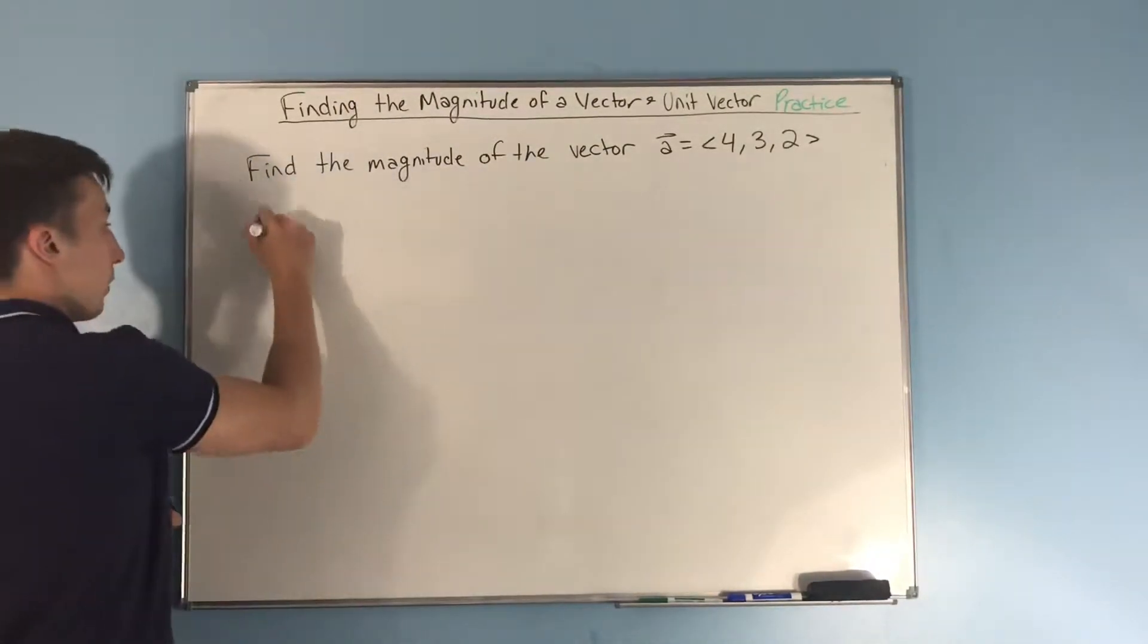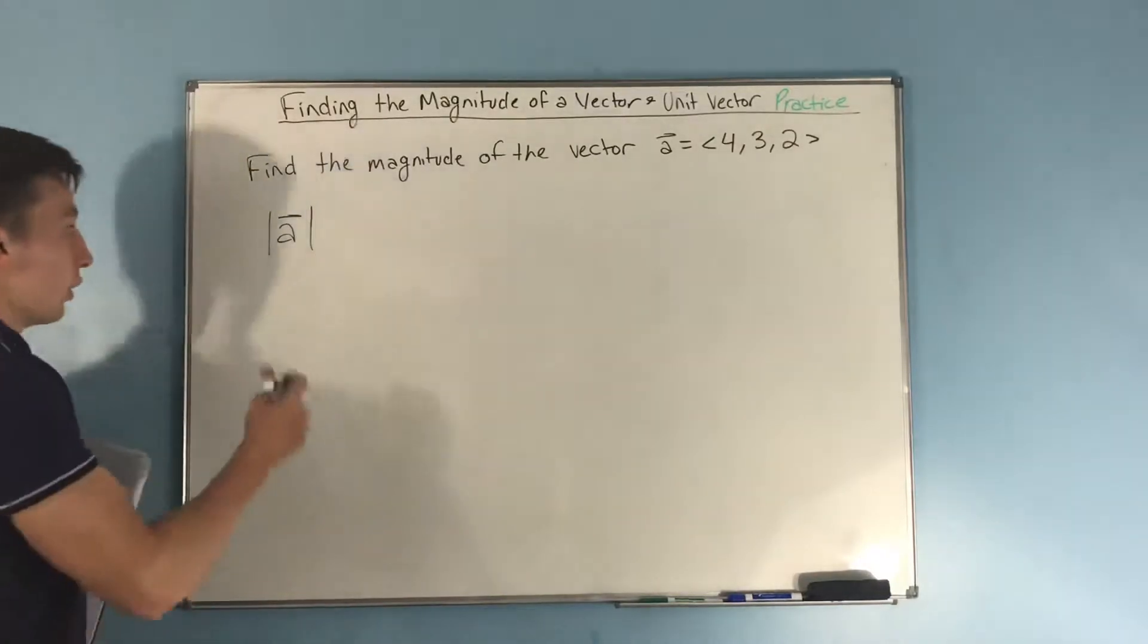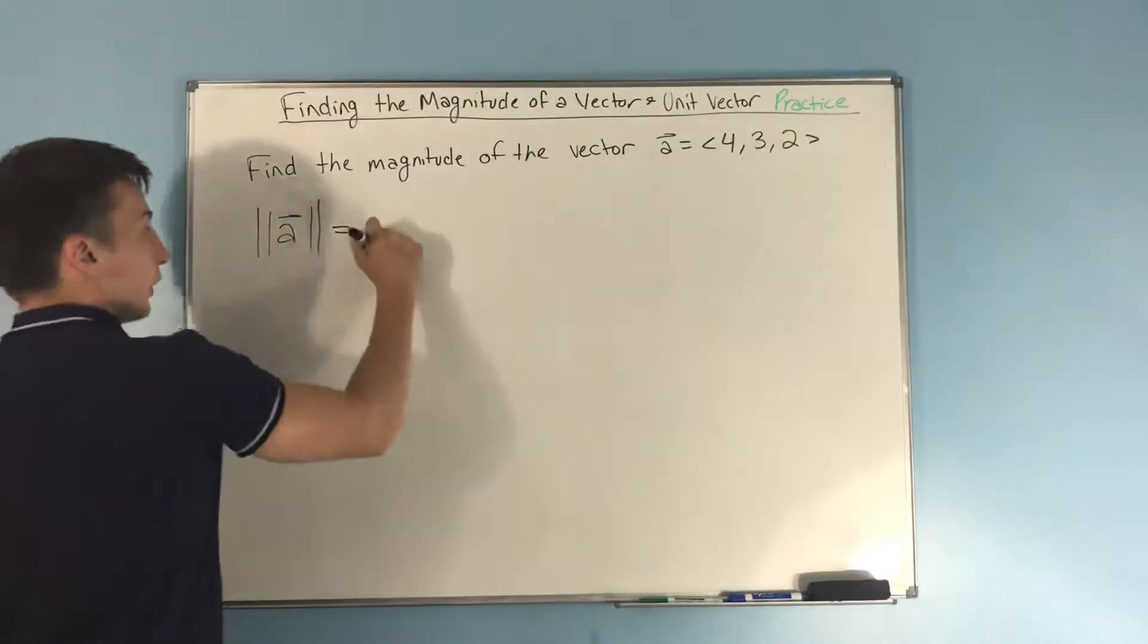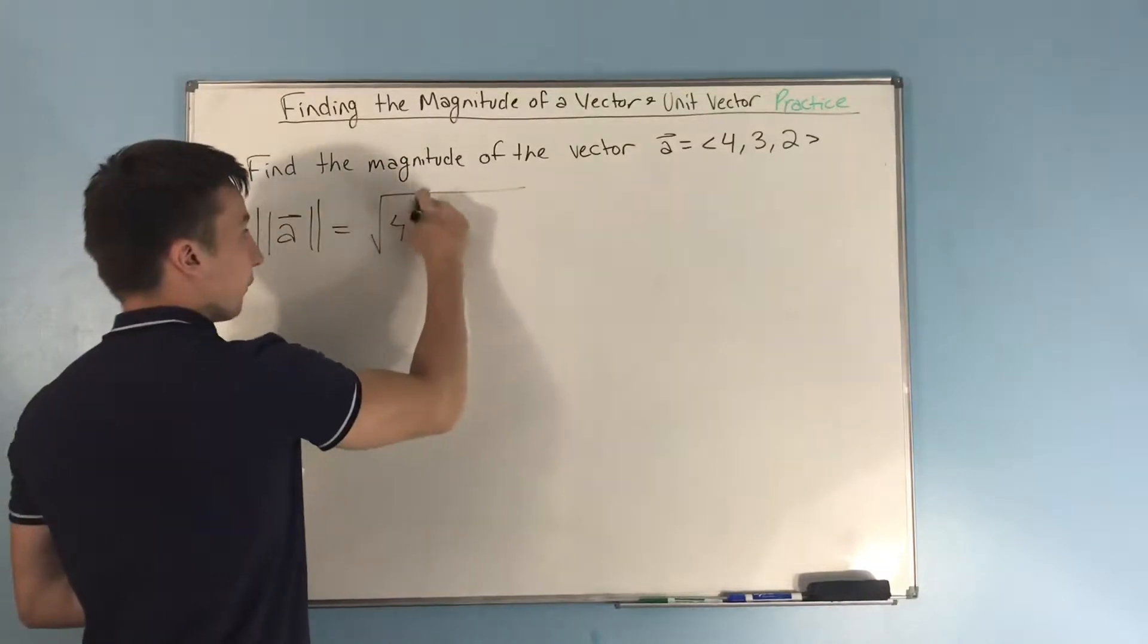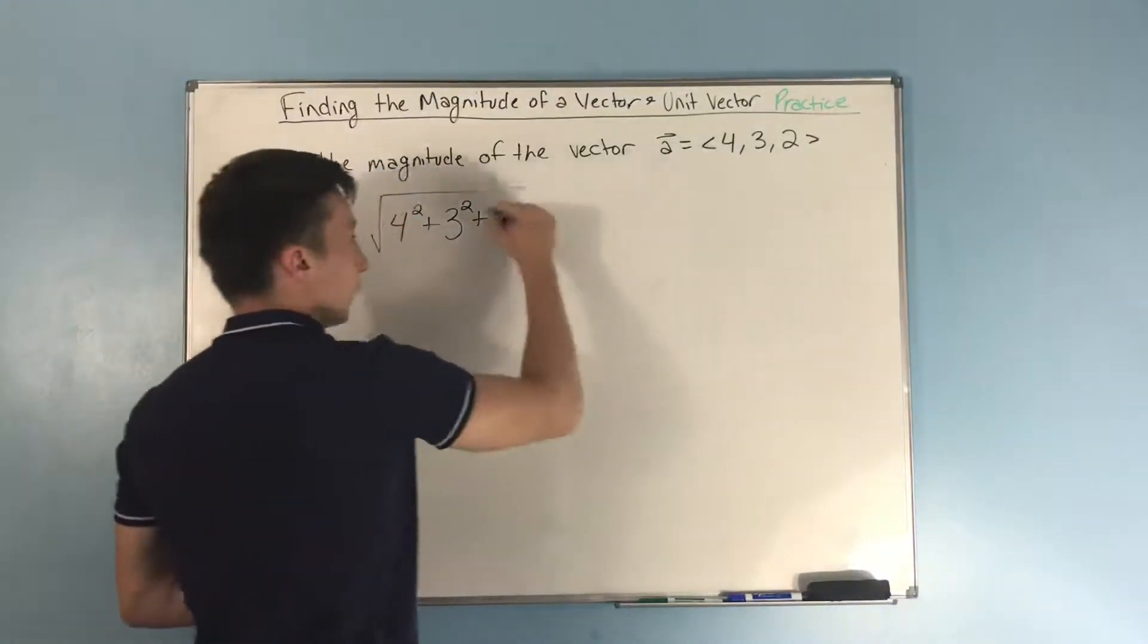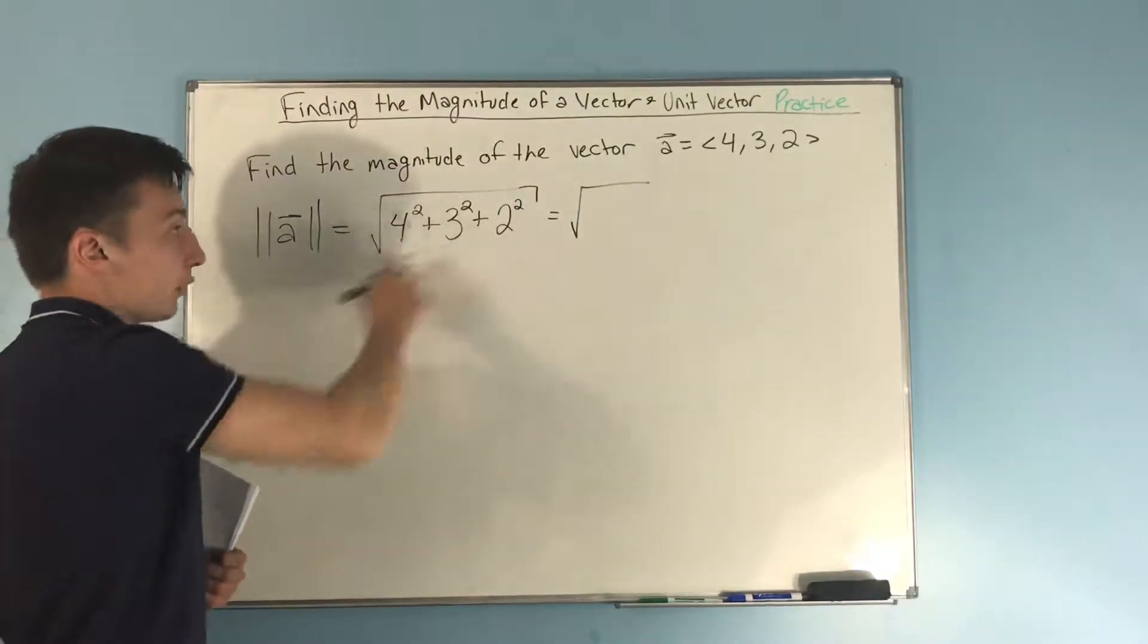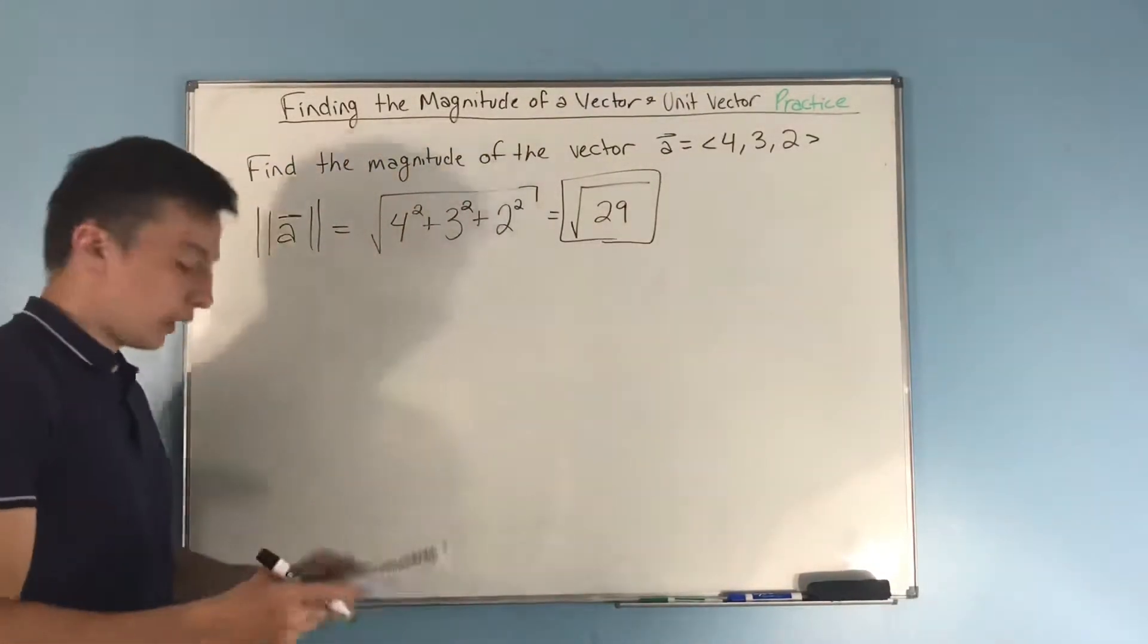So to find the magnitude of a, remember that can be represented either as a with just single bars around it, or you could have double bars. It may range differently from professor to professor or teacher to teacher. So you literally just use your distance formula here. You have your x component squared, so 4 squared, plus your y component, 3, that's going to be squared, plus your z component, 2, that's going to be squared. All right, well, if you square all that, we've got 16 plus 9, which is 25, plus 4, which is square root of 29. And that is the magnitude, simple as that.